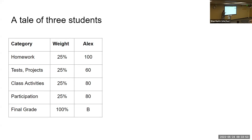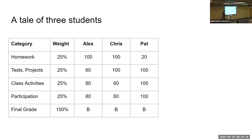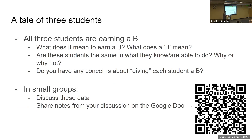Our first student is Alex, who has a mix of grades — doing well in homework, struggling a bit on tests and projects, doing all right in class activities and participation, and earning a B. Chris has a different profile: doing well in homework, tests, and quizzes but struggling in the other two areas — also getting a B. Our third student, Pat, doesn't seem to be engaging in homework but is doing well in all other areas and is also getting a B. With this in mind, what does it mean to earn a B? Are these students the same in what they know and are able to do?